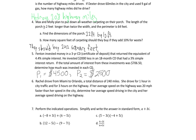For problem six, Rachel drove from Miami to Orlando, a total distance of 240 miles. She drove for one hour in city traffic and three hours on the highway. Her average speed on the highway was 20 miles per hour faster than her speed in the city. We're looking for her speed in the city, so I'll call that X. Total distance equals distance in city plus distance on highway.